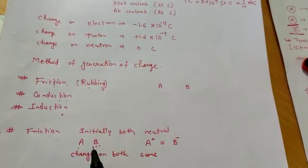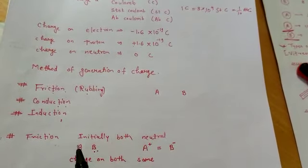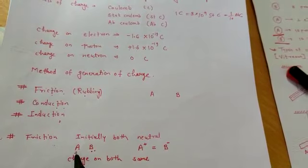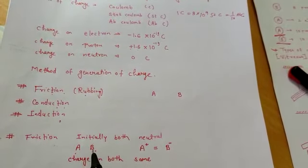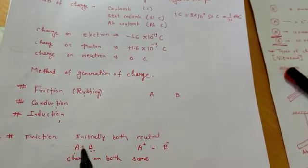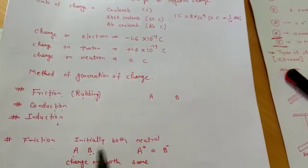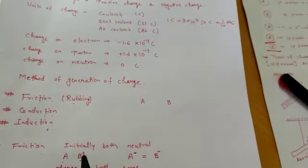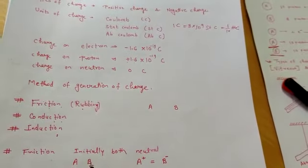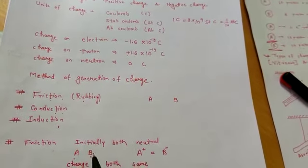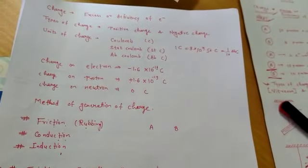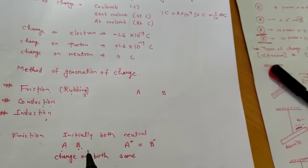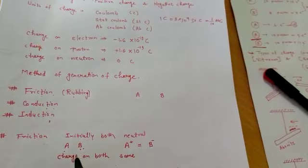When we rub the two bodies together, electrons are transferred from one body to the other. In this way, when any object has a deficiency or excess of electrons, that body is called a charged object. So due to friction, our body becomes charged.